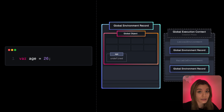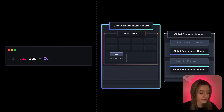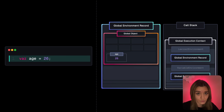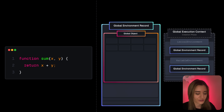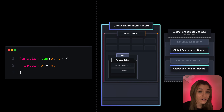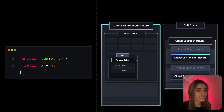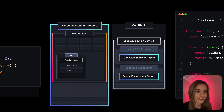Variables with the var keyword are also hoisted and initialized during the creation phase, but with the value undefined. They get redefined with their actual values during the execution phase. Function declarations, including async and generator functions, are already initialized during the creation phase with their actual function object, meaning we can invoke a function before its declaration in the code and it will work fine.